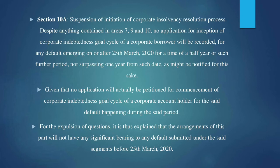Coming to the recently added Section 10A of the Code. Ordinarily, CIRP is a mechanism by which creditors may recover from corporate debtors. This may be availed by financial creditors under Section 7, operational creditors under Section 9, and corporate debtors themselves under Section 10. However, with the introduction of Section 10A, a blanket suspension has been put on Sections 7, 9, and 10.